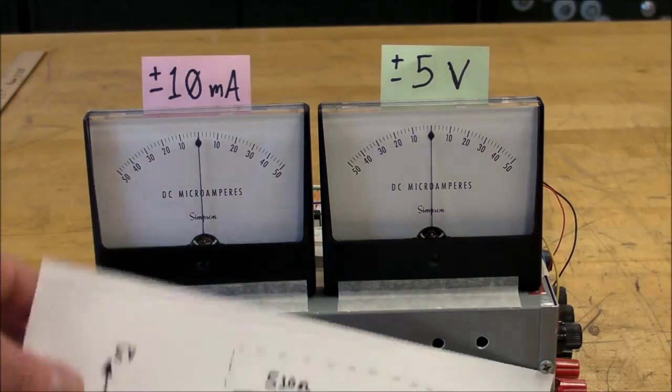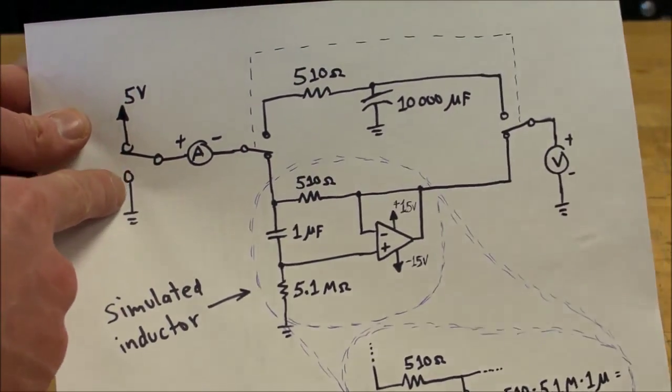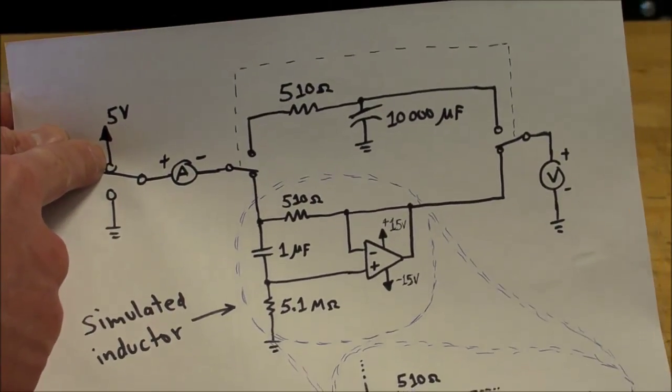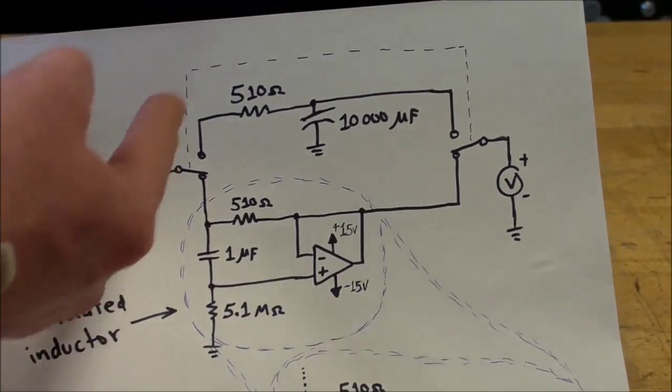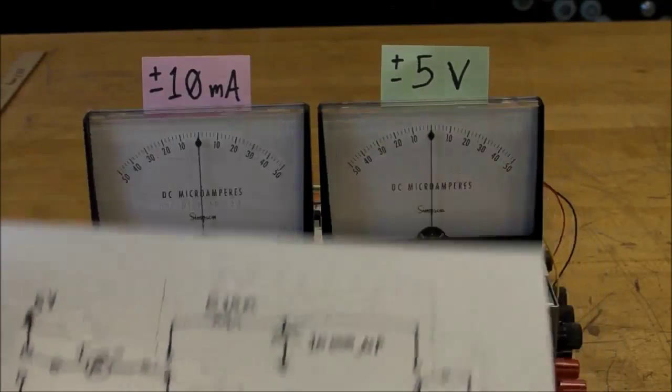Everything is right now at ground. Let me flip this switch in the back of it here - flip it from ground up to 5 volts. Right now these two switches are also in the up direction for the capacitor circuit.